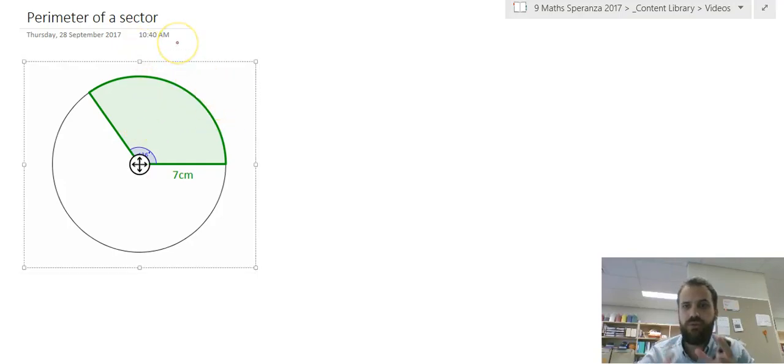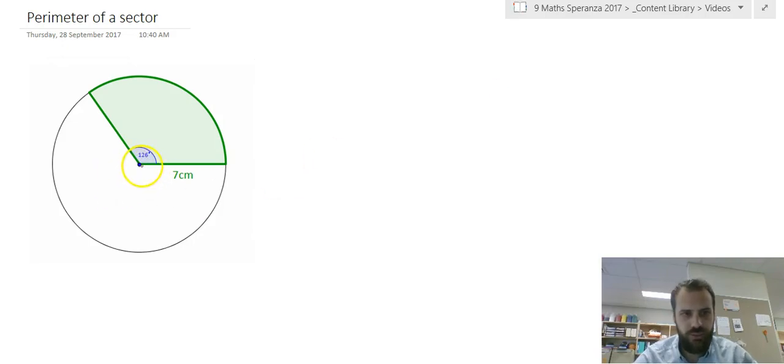In this video we're looking at the perimeter of a sector. Remember perimeter means the distance around a shape. So this particular shape, we're looking for the distance along this line, along this curvy bit here, and along this line here.